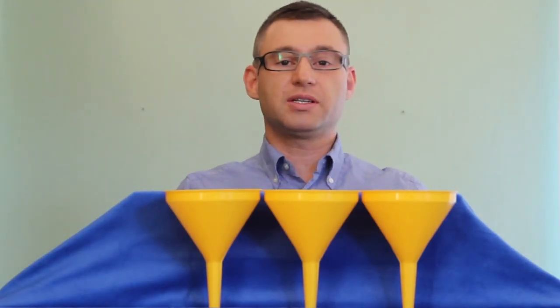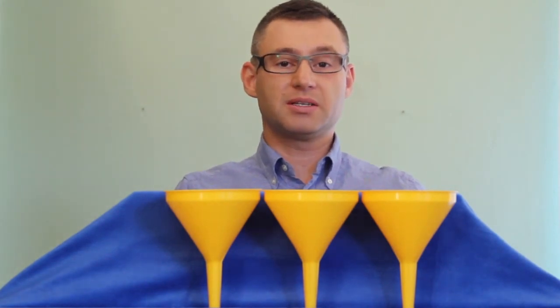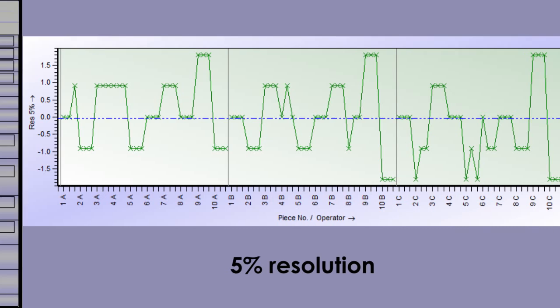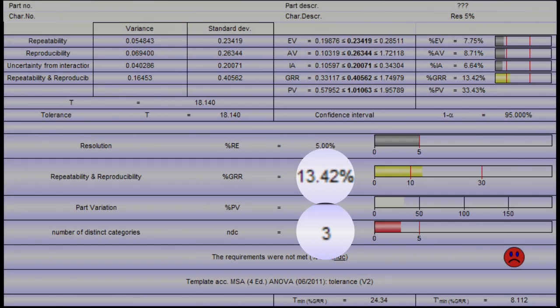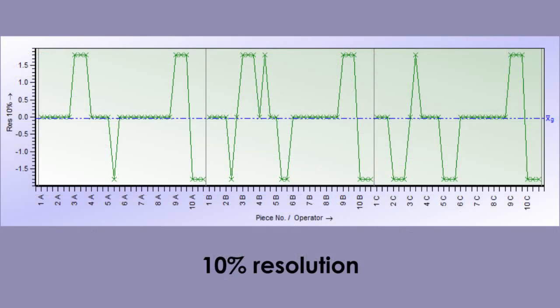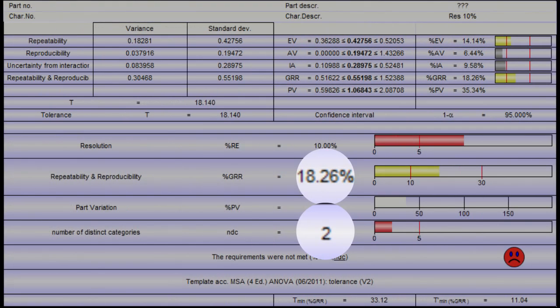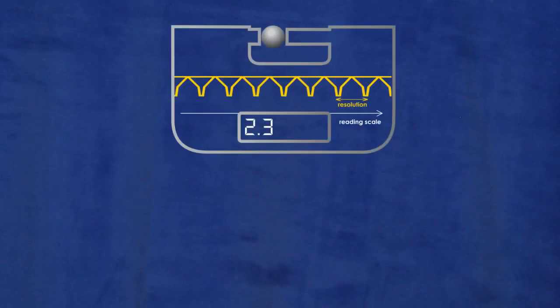Just out of interest, this is what the data of the presented example would look like when measured with 5% resolution. Due to rounding, the gauge R&R is now over 13% and the NDC is 3. And with 10% resolution, the gauge R&R is over 18% and the NDC is only 2. The change in the resulting parameters is all due to lowered resolution.